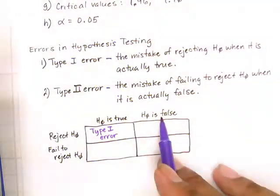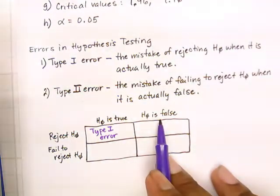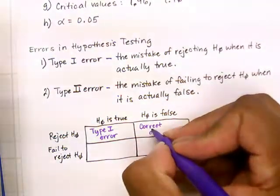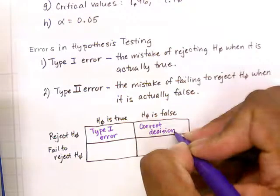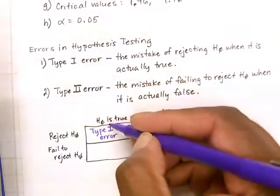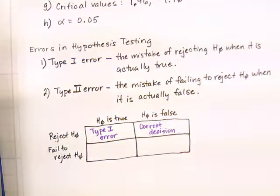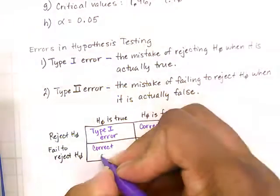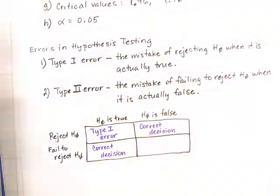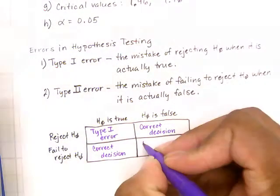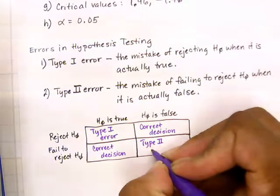If you reject the null hypothesis and it is false, you make the correct decision — because you do want to reject something that is false. If the null hypothesis is true and you fail to reject it, you also made the correct decision. But if you fail to reject the null hypothesis and it is actually false, that's the definition of a Type 2 error — you've committed a Type 2 error.